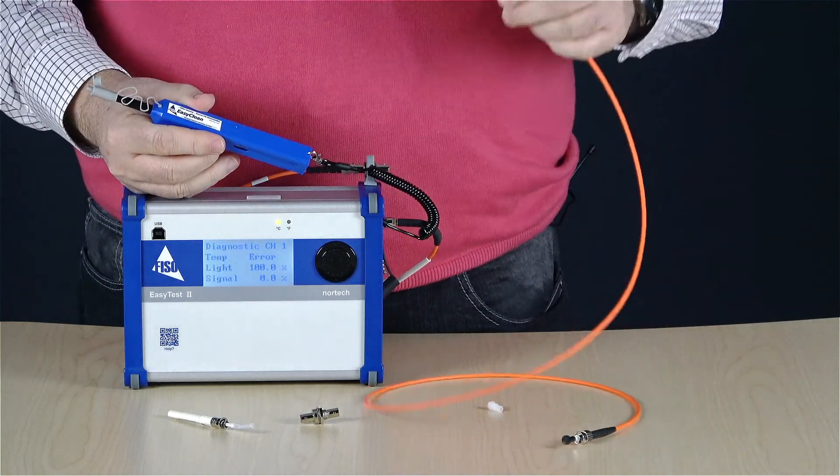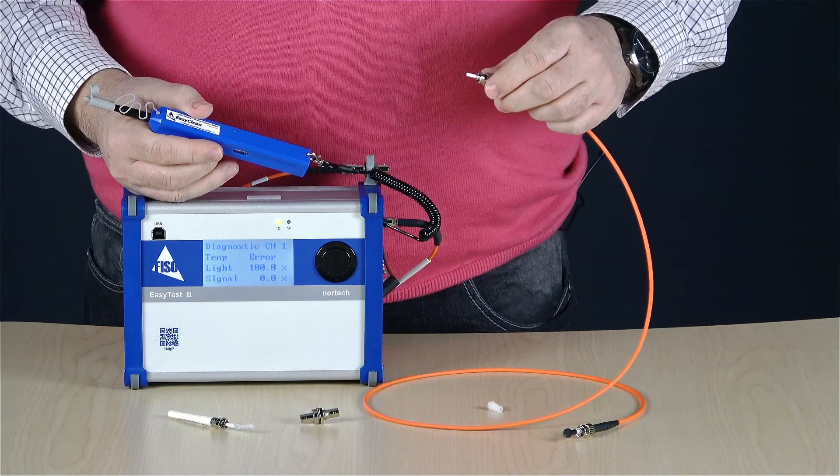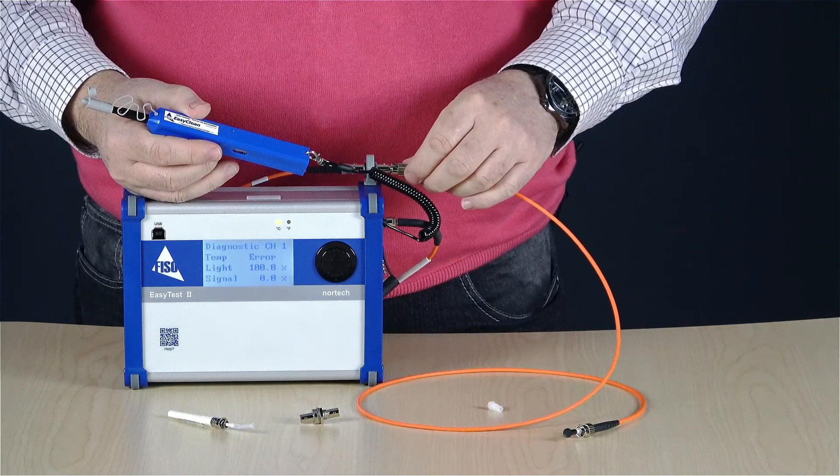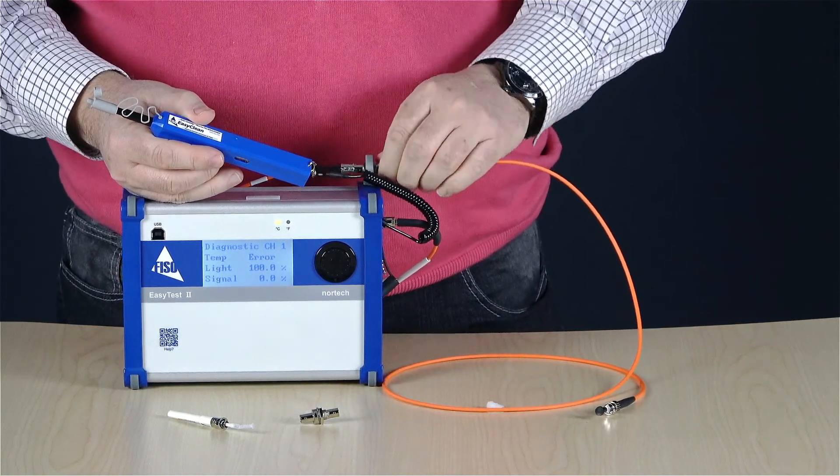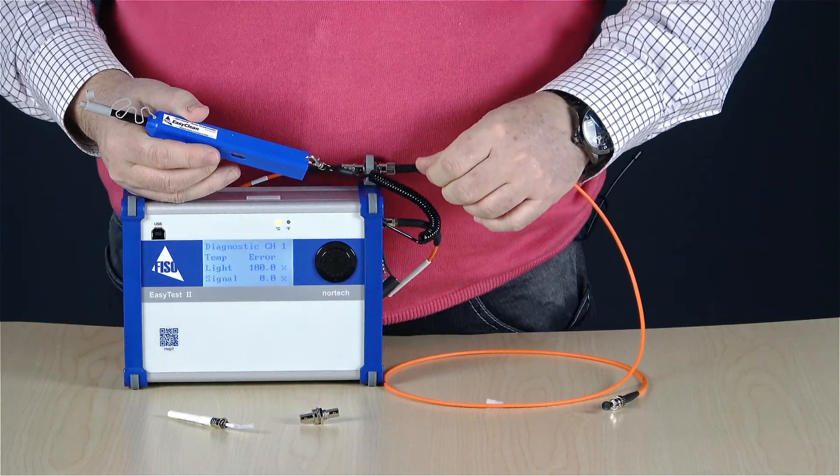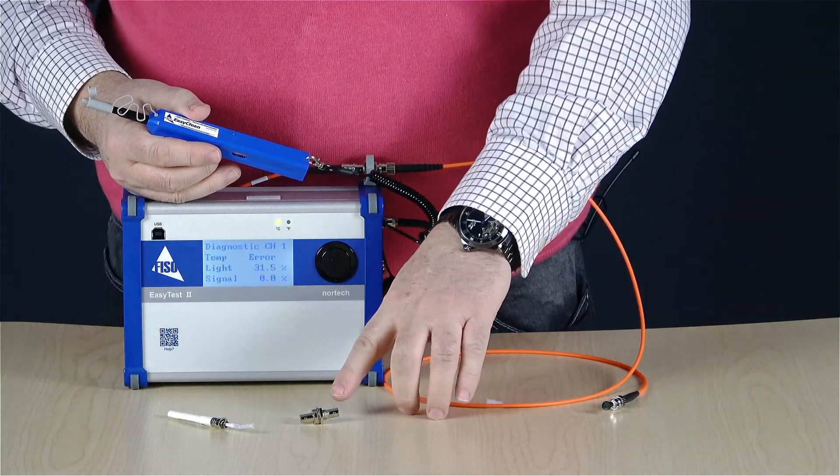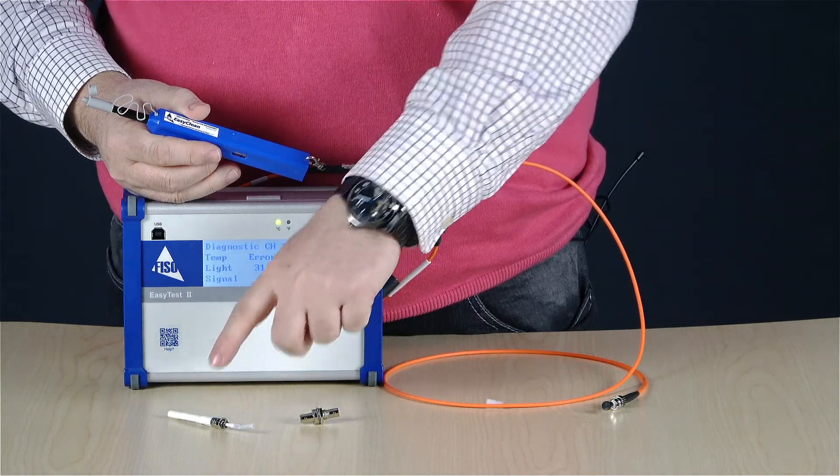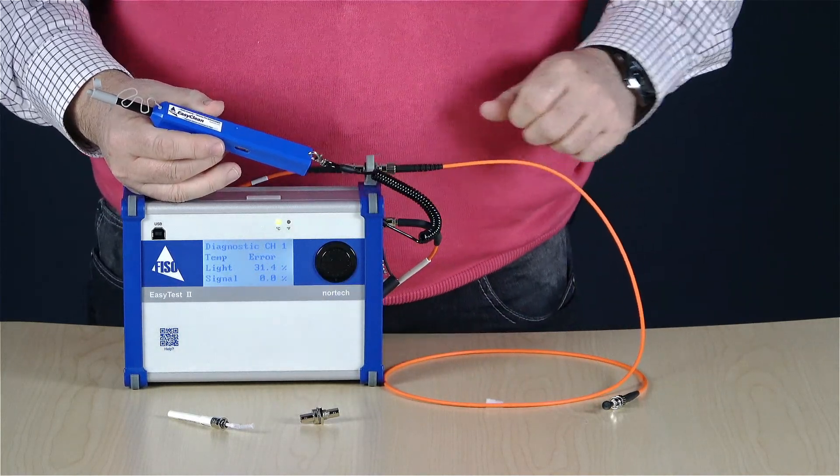First, connect the CFO to the EasyTest2 port saver. Then, using the STST mating, connect the EasyCheck at the other end of the CFO.